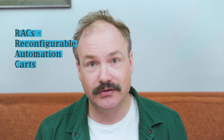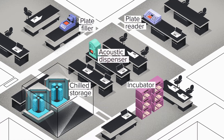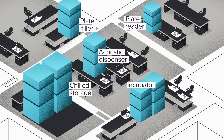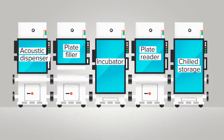Another example: we organize automation workflows using RACs — reconfigurable automation carts. In this case, the inputs are all the robotics that you'll find in a modern biotech lab: plate readers, liquid handlers, PCR machines, centrifuges, etc. The outputs are the entire universe of potential R&D workflows — drug discovery, CRISPR screening, sample prep for next-gen sequencing. The RACs take all of those robots and package them into a few standard form factors, making them easy to connect together into a single assembly line.